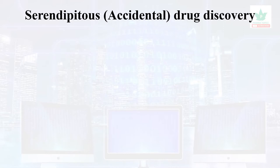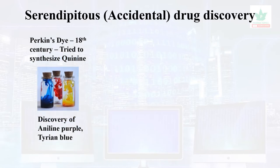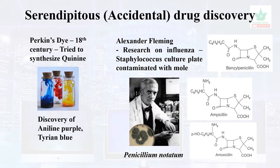Serendipity means accidental drug discovery. Perkin's dye was identified in the 18th century — he tried to synthesize quinine but discovered a dye called aniline purple, also known as Tyrian blue. Many dyes with pharmacological uses were identified from this work, and the first dye concept was established by Perkin in the 18th century.